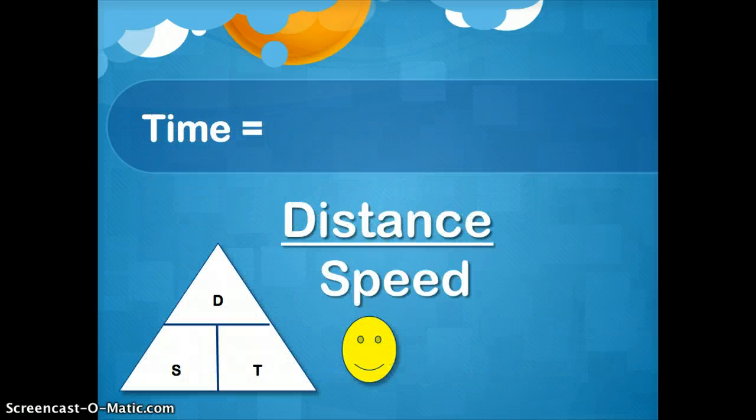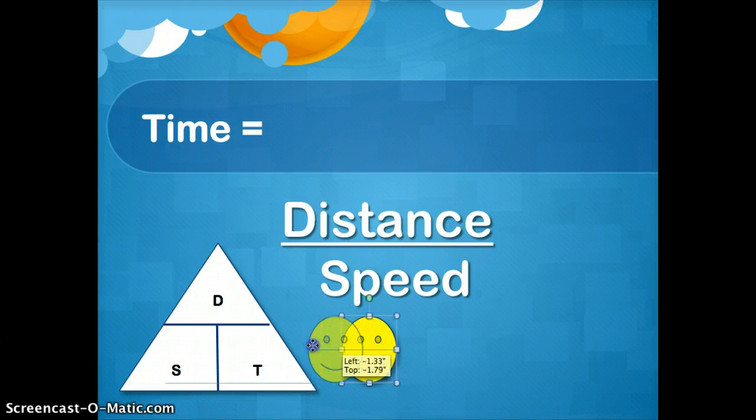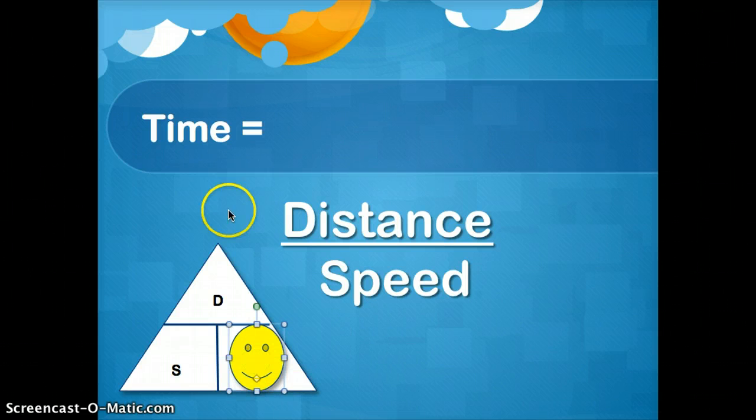Sometimes they'll ask you to find the time instead of the distance. So it might say you went a certain distance at this speed. How long did it take you or how much time did it take you? You can use this little triangle again, the exact same triangle. You just cover up the T for time because that's what you're looking for. And the formula is distance over speed. So this triangle will help you know exactly what formula to use. Distance over speed or distance divided by speed. Same thing. Let's do an example.